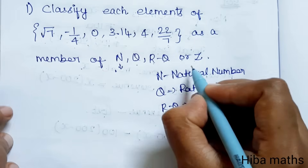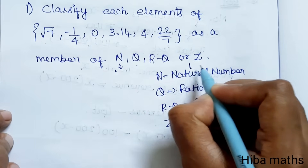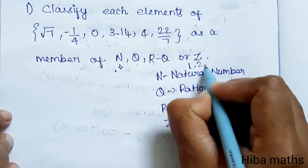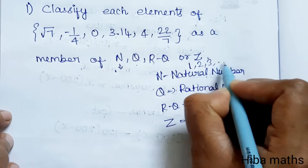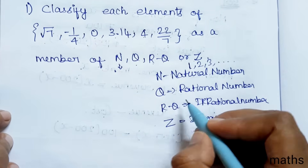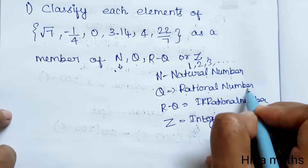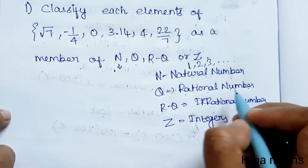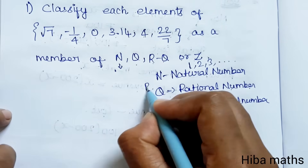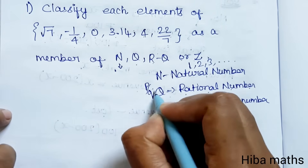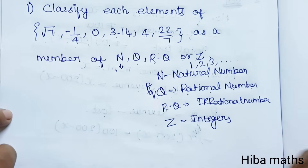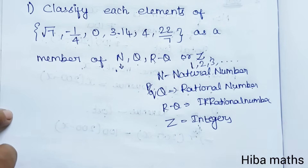Natural numbers start from 1 — 1, 2, 3 — and go on. Q is a rational number. A rational number is in P by Q format, meaning it has a numerator and a denominator.